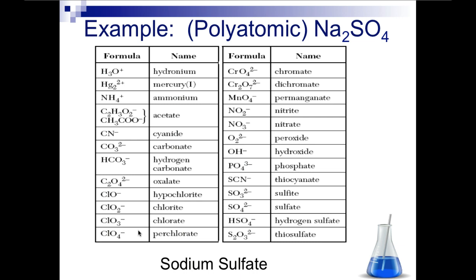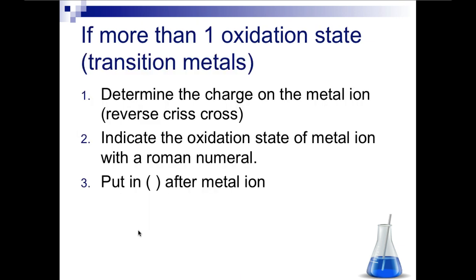Now, what if we have a metal that has more than one oxidation state? This is going to happen when we have the metals that are in groups 3 through 12 on our periodic table.